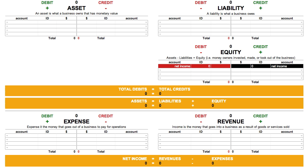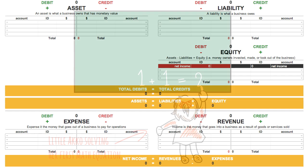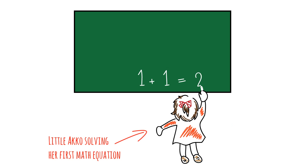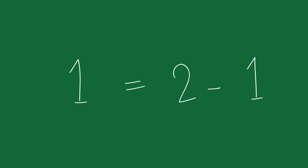But before I get cracking on using the cheat sheet, I want to help you understand the accounting equation by taking you back to the first math equation you've probably solved in your life: one plus one equals two. It's simple, right? If you know that equation, then you probably understand this one: one equals two minus one.